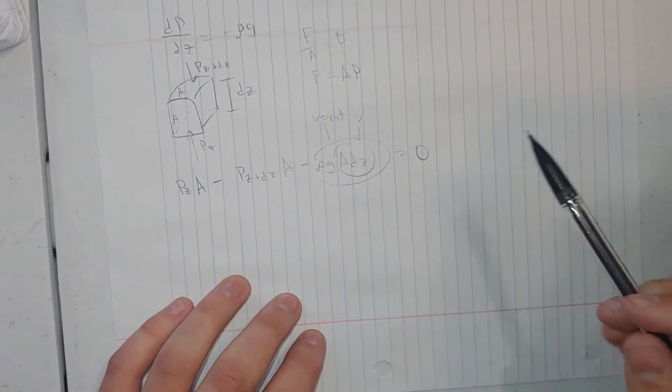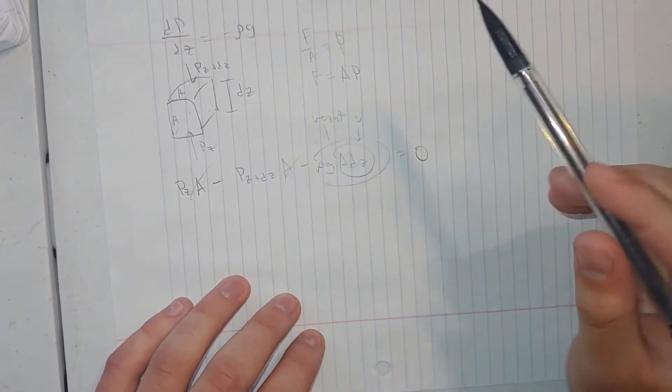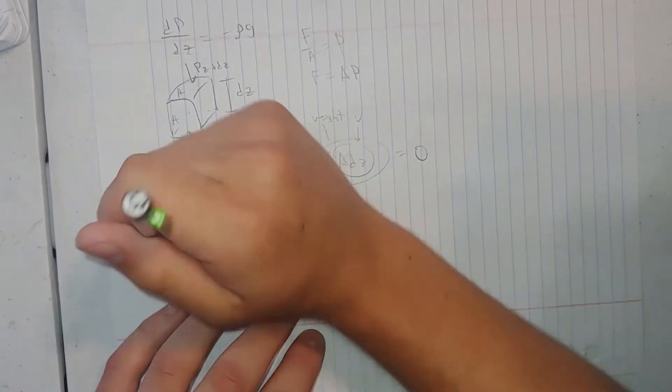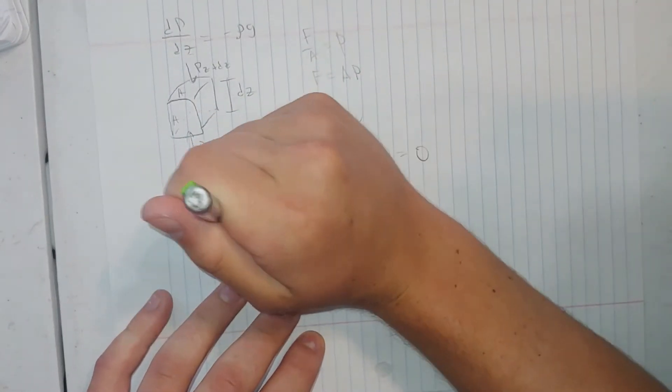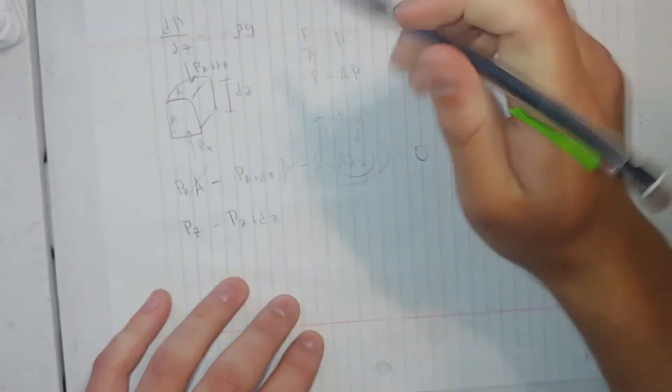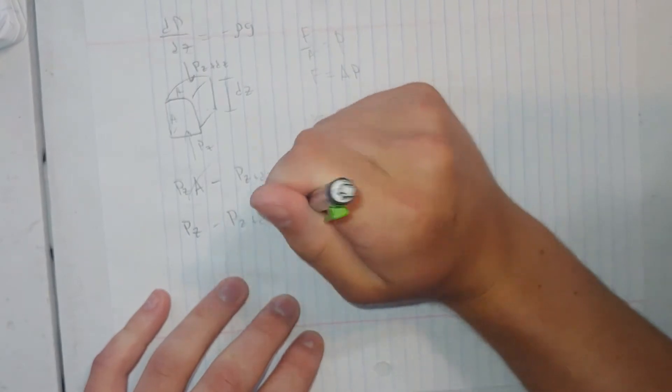So some basic arithmetic here. We see every term has an A in it, so we can cancel those out. That leaves us with pz minus p(z+dz). We're going to move the ρg to the other side.